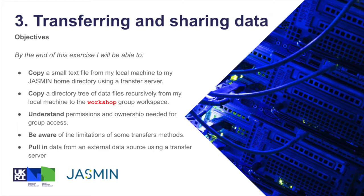Here are our objectives for this exercise. By the end of this exercise I'll be able to copy a small text file from my local machine to my Jasmine home directory using a transfer server, copy a directory tree of data files recursively from my local machine to the workshop group workspace, understand permissions and ownership needed for group access, and be aware of the limitations of some transfer methods and pull in data from an external data source using a transfer server.